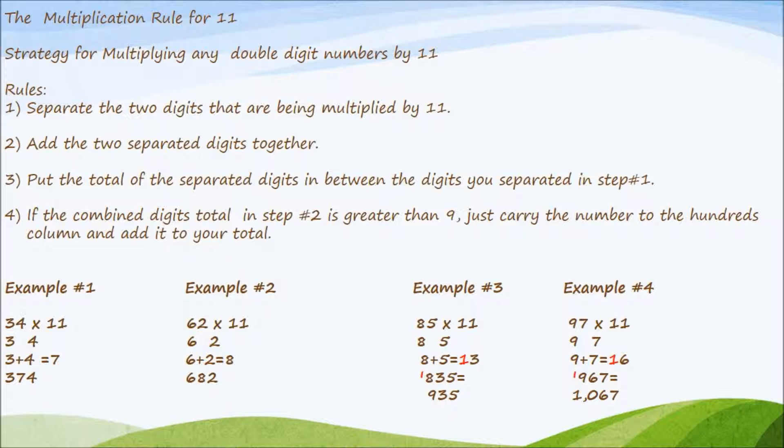Example 1. We have 34 times 11. We're going to separate the 3 and the 4. We'll move the digit 3 over to the left and 4 off to the right. Now let's add the totals of 3 plus 4 equals 7. Now just place the 7 in between your 3 and the 4. Final answer 374.